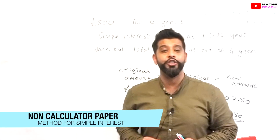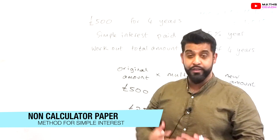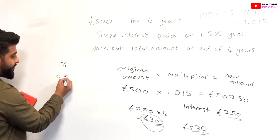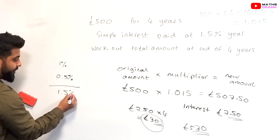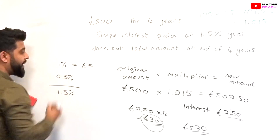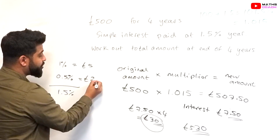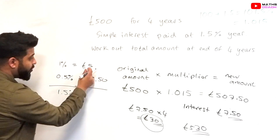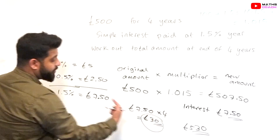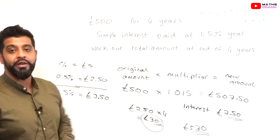Now I'm going to quickly show you how to do this on a non-calculator paper. We break up 1.5% into 1% and 0.5%. To find 1% of £500 we divide by 100, giving £5. Then 0.5% is £5 divided by 2, which is £2.50. So 1.5% equals £5 plus £2.50, giving £7.50. Then £7.50 times 4: we do 7.5 times 2 equals 15, times 2 again equals 30 — so £30.